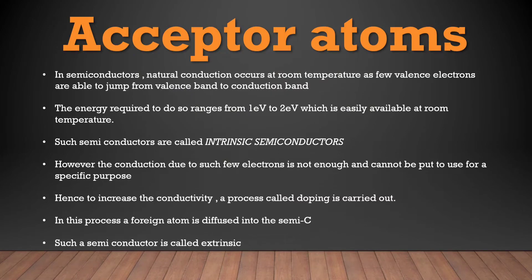Word number three: acceptor atoms in semiconductors. Natural conduction occurs at room temperature as few electrons are able to jump from the valence band to the conduction band. The energy required to do so ranges from one electron volt to two electron volts, which is easily available at room temperature. Such semiconductors are called intrinsic semiconductors.